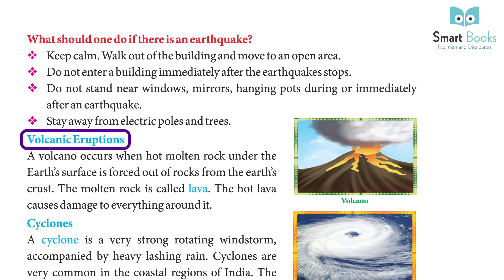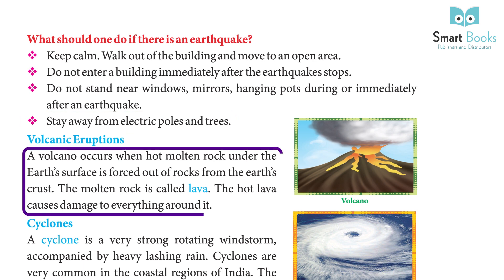Volcanic eruptions: A volcano occurs when hot, molten rock under the earth's surface is forced out through rocks from the earth's crust. The molten rock is called lava. The hot lava causes damage to everything around it.